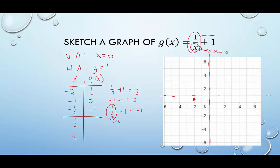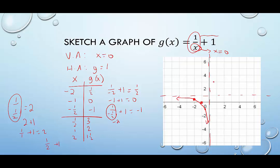Plotting the left-side points: negative 2, one half is just below the horizontal asymptote; negative 1, 0; and negative one half, negative 1. That gives the right shape for this piece of the graph, hugging the asymptotes. On the right side: plugging in one half gives 1 over one half plus 1, which is 2 plus 1 equals 3. Plugging in 1 gives 1 over 1 plus 1 equals 2. Plugging in 2 gives one half plus 1, which is 1 and a half. So the points are one half, 3; then 1, 2; and 2, 1.5 — forming a nice curve on the right side.